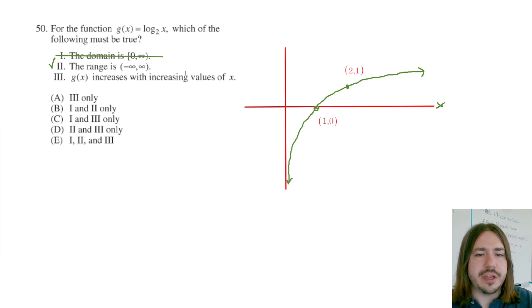It says g of x increases with increasing value of x. We can see that that's clearly true, just based on the shape of this graph. As x goes to the right, as x increases, you can see that the value of this function is always increasing. So because statement 2 and statement 3 are correct, we are going to say that our answer here is choice D.